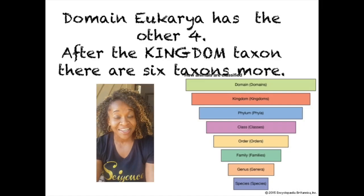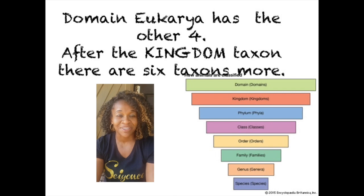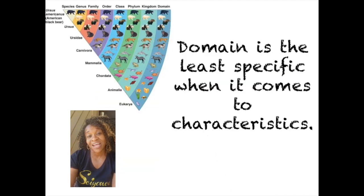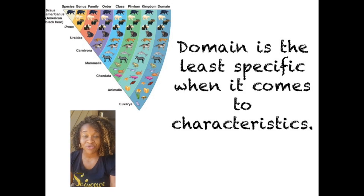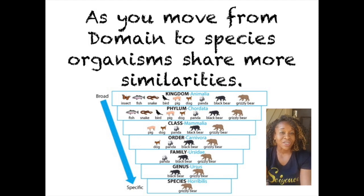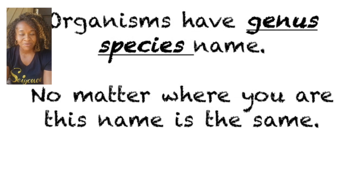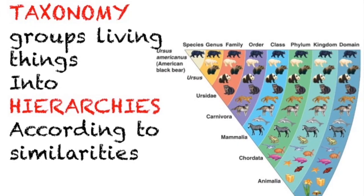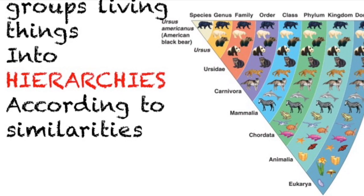Eubacteria has the other four kingdoms. Domain is the least specific when it comes to characteristics. As you move from domain to species, organisms share more similarities. Organisms have a genus-species name — no matter where you are, this name is the same.